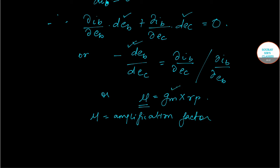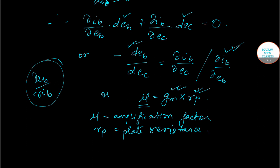Next we have RP. RP is given by del EB by del IB, which is this part. This can be rewritten as the plate resistance. And lastly, we have GM, which is our mutual conductance.